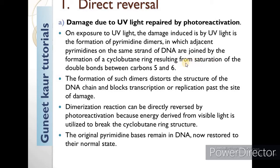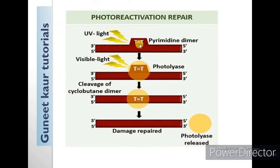The cyclobutane ring results from saturation of the double bond between the 5 and 6 carbons. We can see here there are double bonds, and we can also see the cyclobutane ring on the pyrimidine bases. So when we expose UV light, our DNA is damaged and pyrimidines are damaged. So we have to remove this cyclobutane ring.